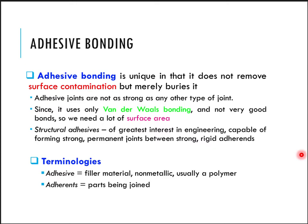Some of the terminologies used in adhesive bonding are adhesive and adherends. The adhesive is basically the filler material — a chemical-based filler material, sometimes a polymer. Adherends are those parts which are required to be joined using the adhesive.